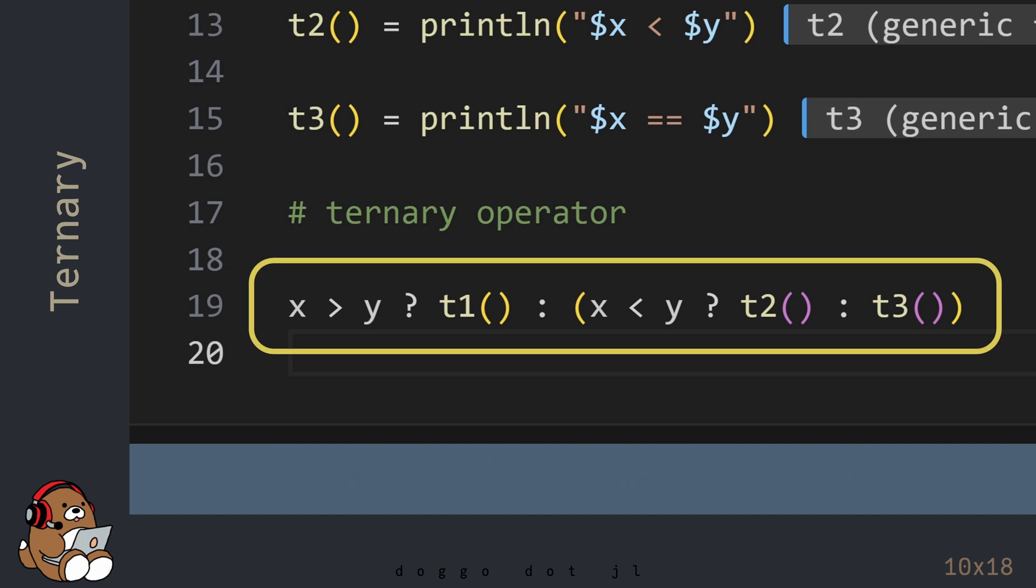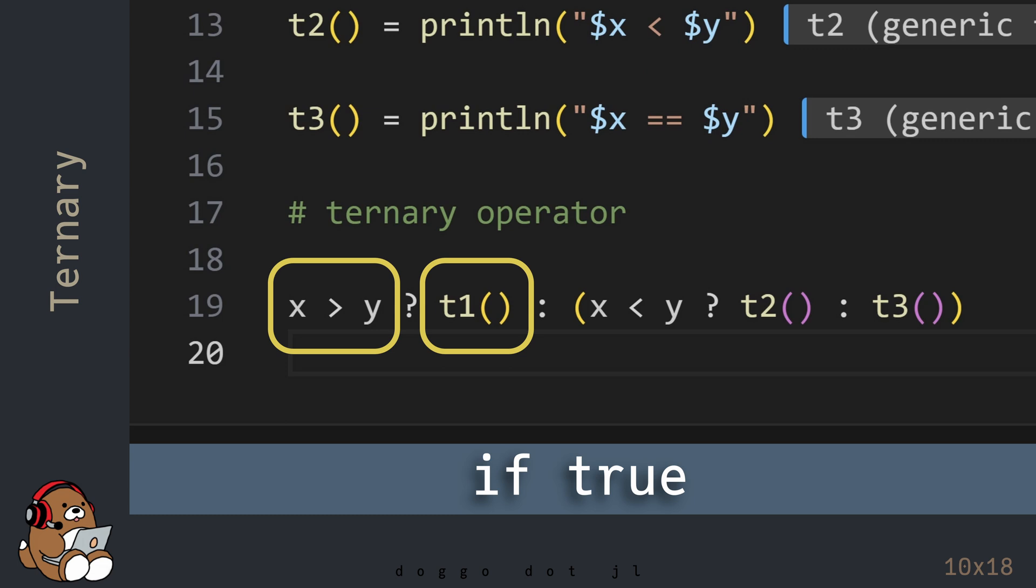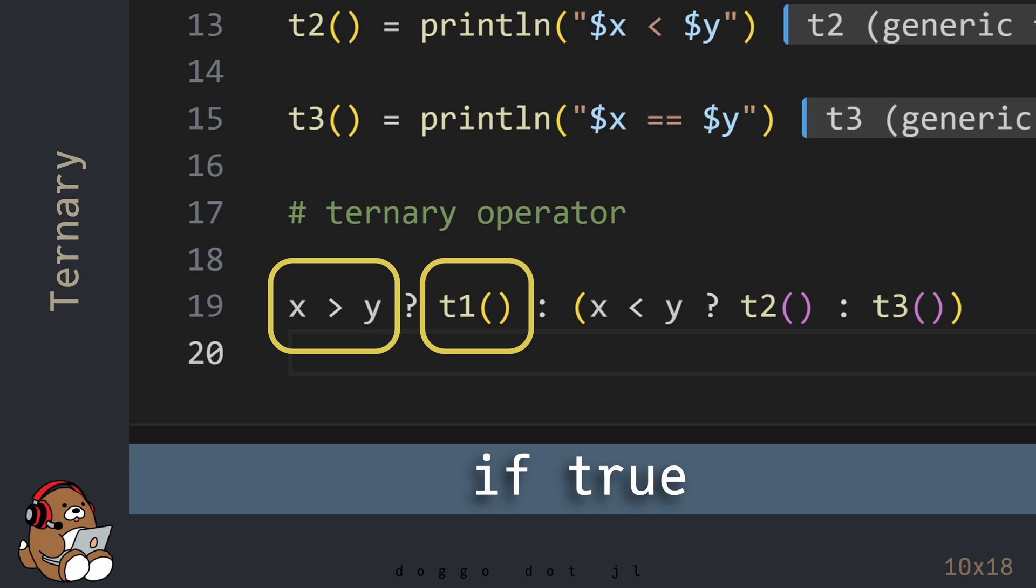Now before hitting Shift-Enter, let's talk about this code. Starting on the left-hand side, X is greater than Y is a conditional statement that will evaluate either True or False. If the conditional statement is True, then the code after the question mark is evaluated. If the conditional statement is False, then the code after the colon is evaluated.